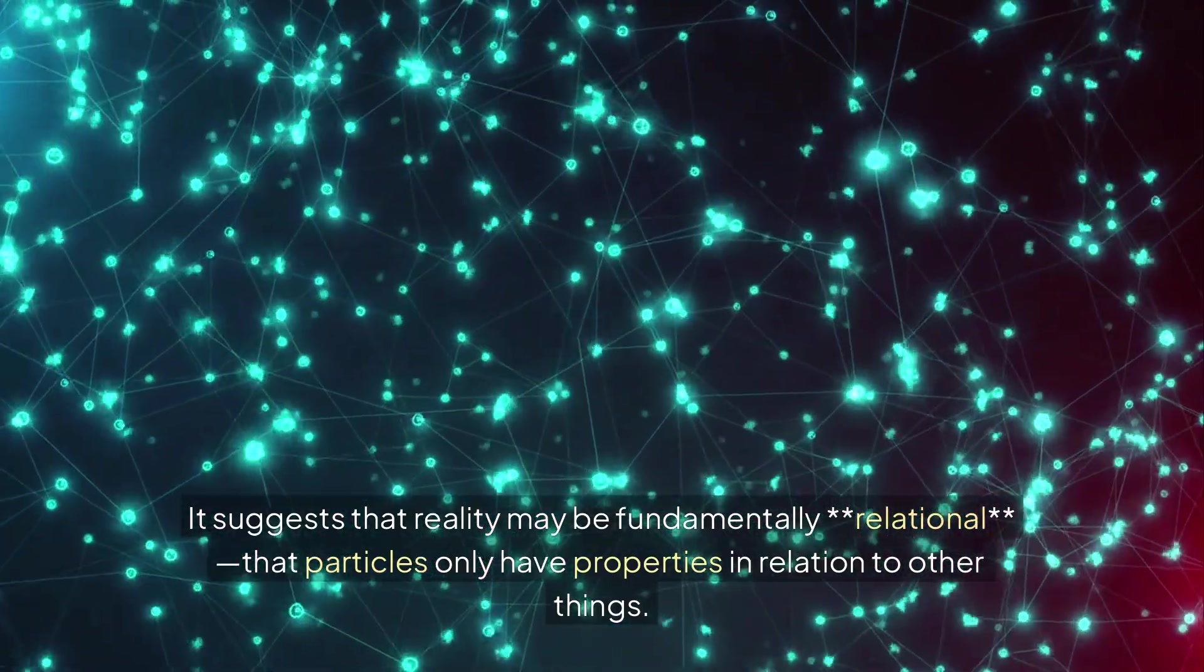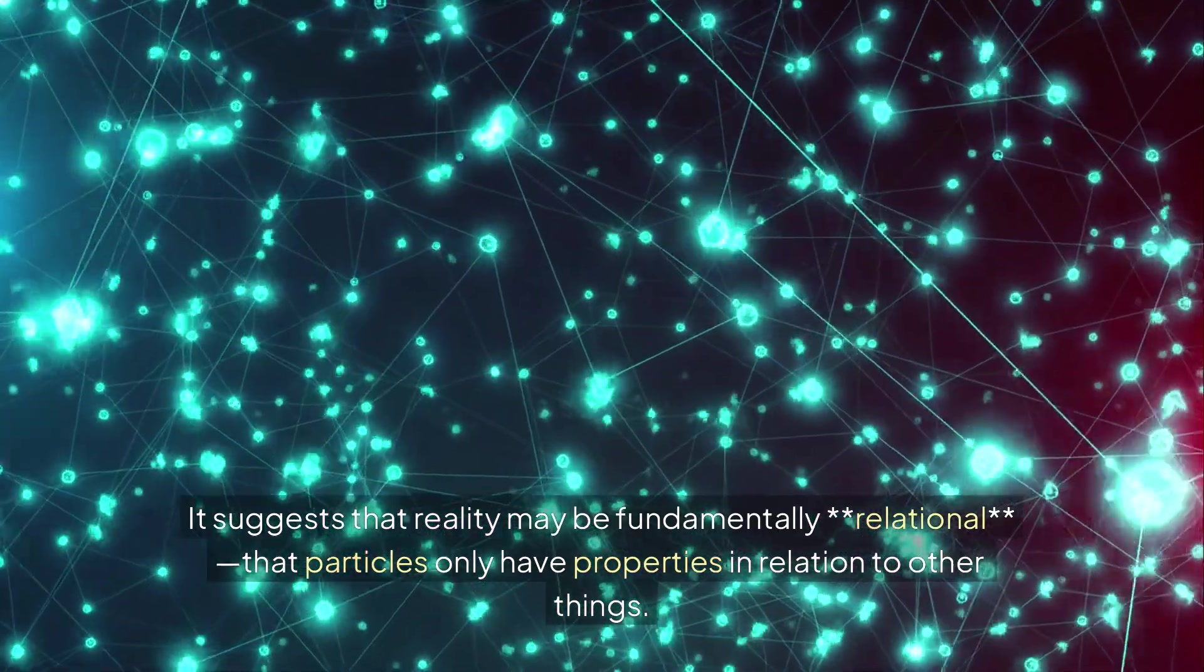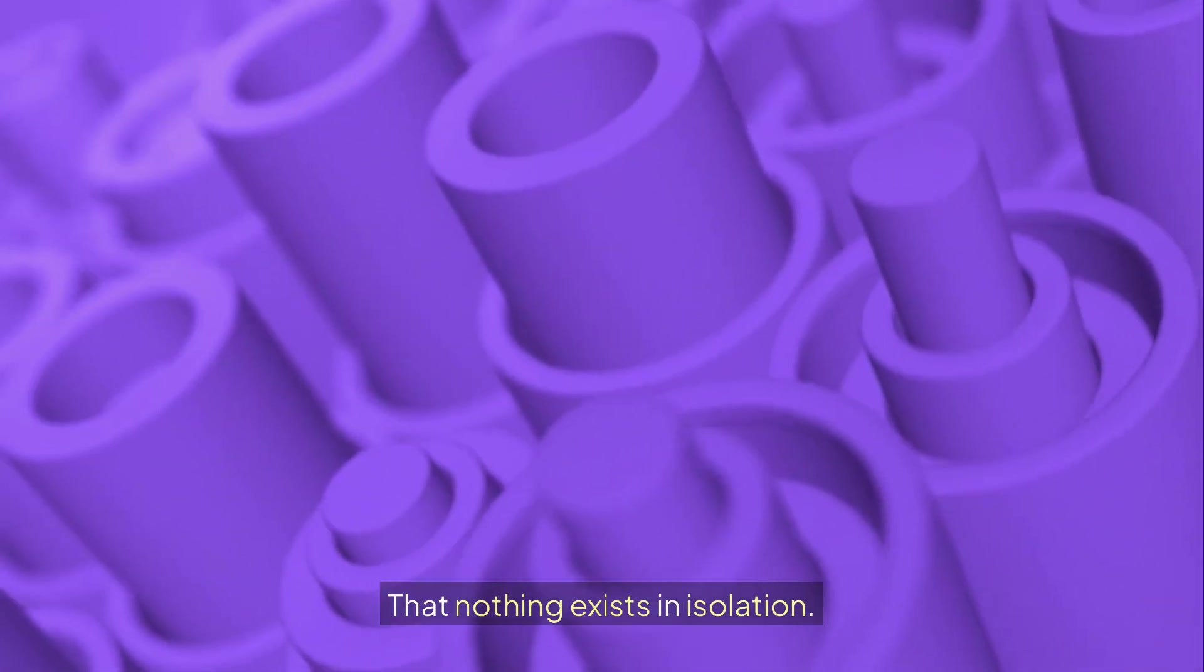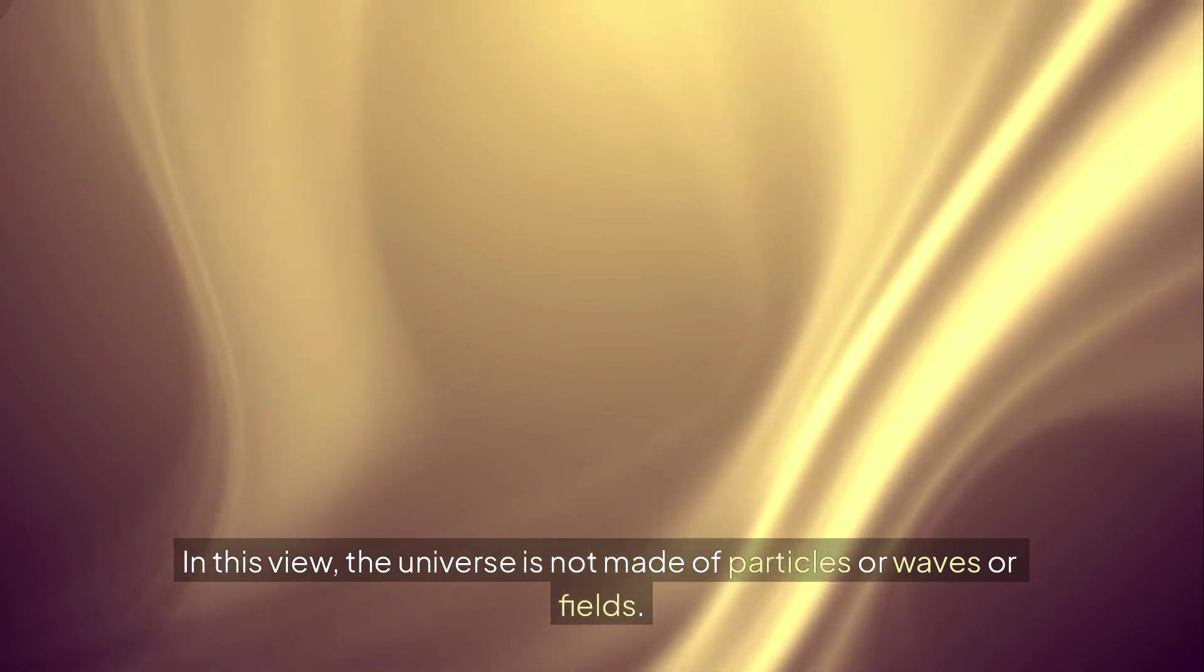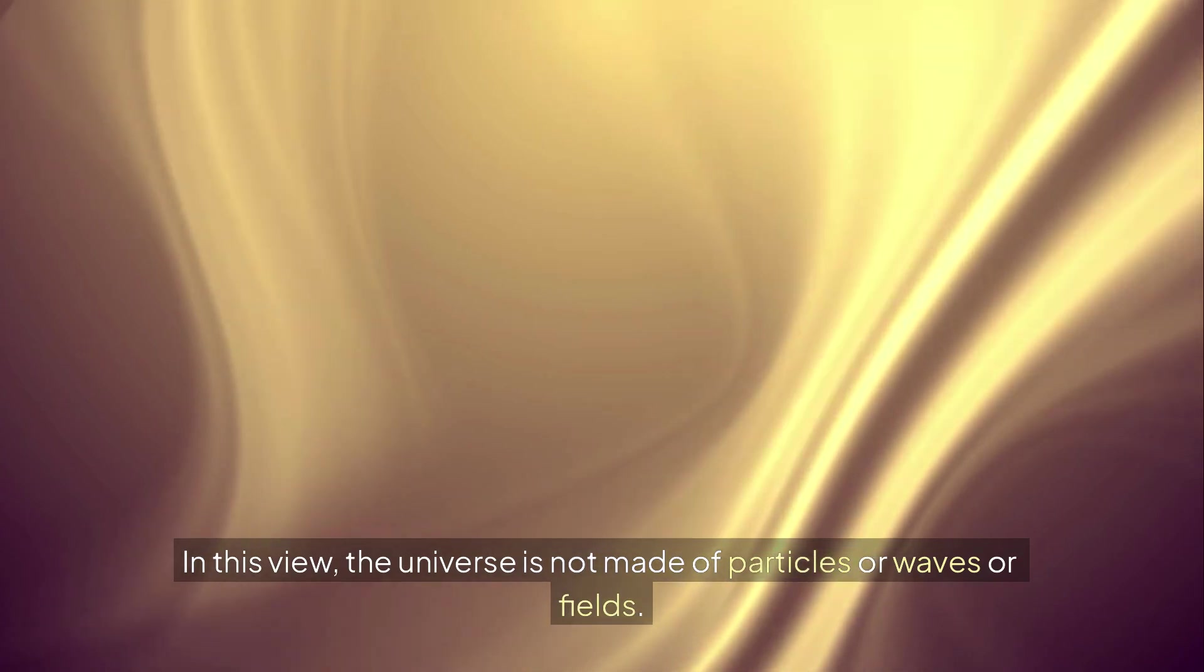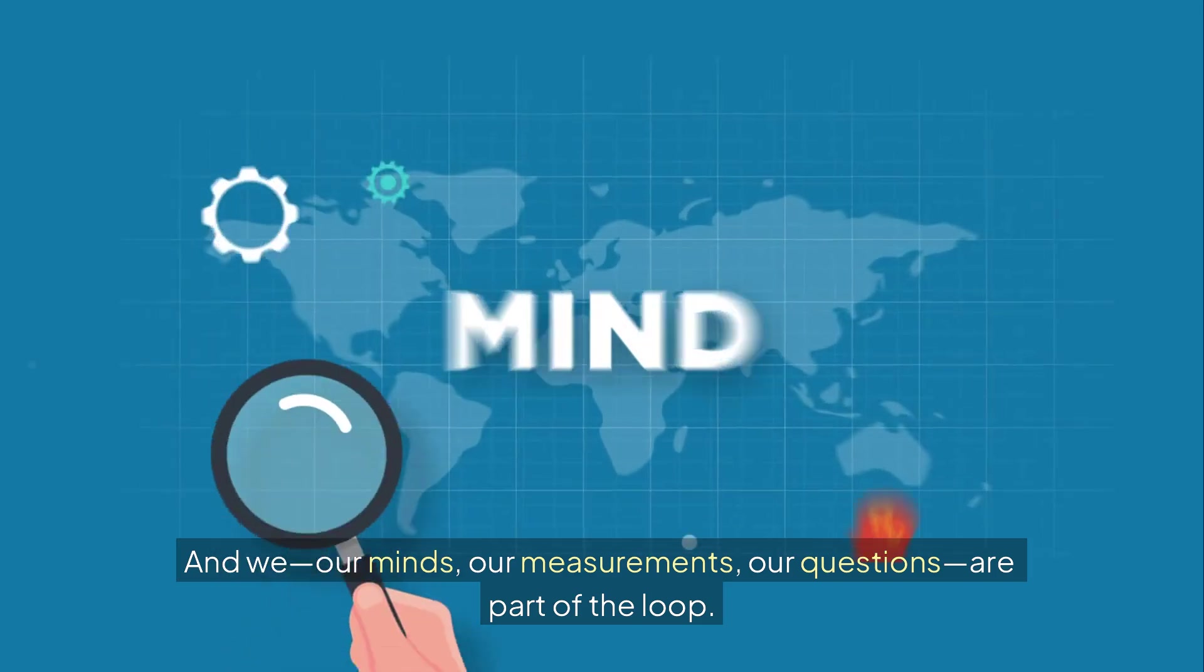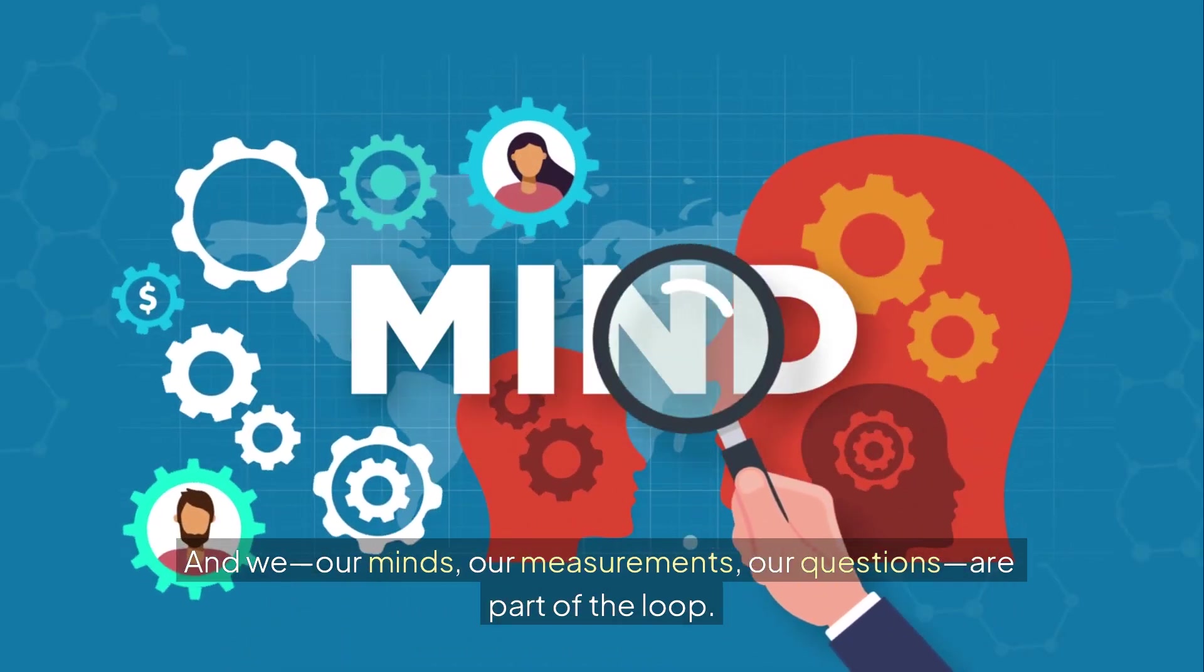It suggests that reality is not a static backdrop, but an evolving structure shaped by information, interaction and awareness. It suggests that reality may be fundamentally relational. That particles only have properties in relation to other things. That nothing exists in isolation. In this view, the universe is not made of particles or waves or fields. It's made of relationships, networks of interaction, dynamic loops of information. And we, our minds, our measurements, our questions, are part of the loop.